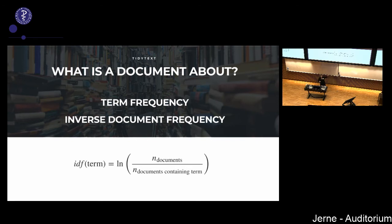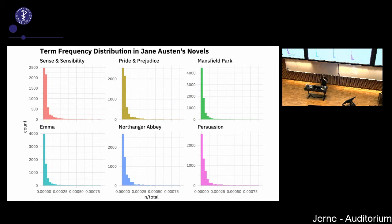Inverse document frequency is the natural log of the number of documents divided by the number of documents containing a given word. If all documents contain the word 'the,' the ratio is one, log of one is zero, and IDF is weighted down. If only one document contains a word, the ratio is large, and it's weighted higher. TF-IDF is a heuristic statistic — it doesn't have a theoretical reason why it should work, but it works. It finds words that are distinctive in a document within a collection.